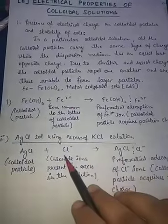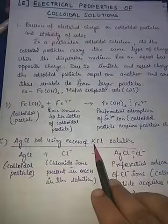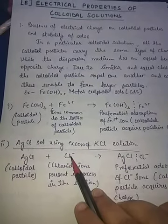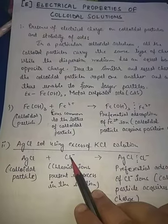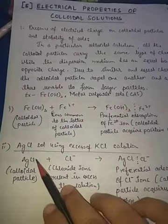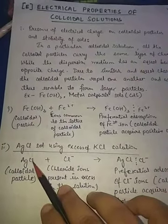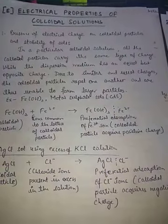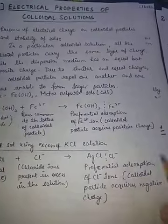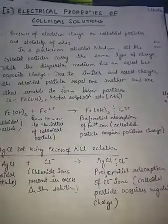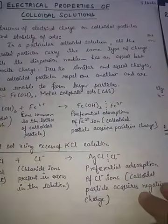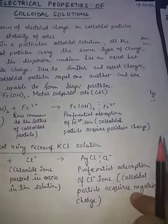Another example: for AgCl, if excess KCl is added, the Cl⁻ ions are in excess in the solution. These Cl⁻ ions get absorbed on the AgCl particles, making the colloidal particles negatively charged. These negative charges keep repelling each other, making the colloidal sol stable.